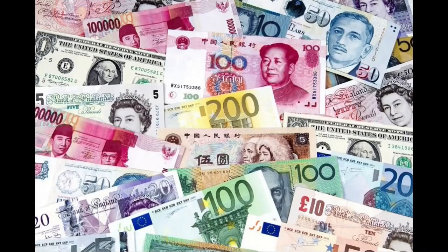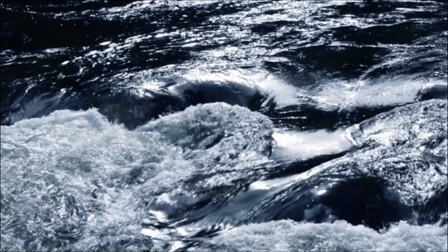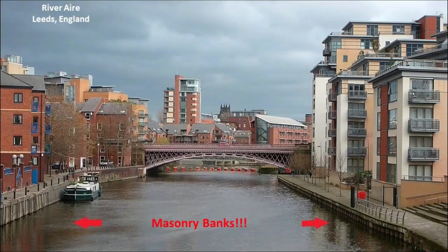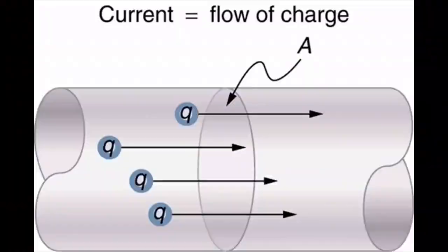What do banks deal in? Currency. Currency is defined as a system of money in general use in a particular country. A river current is defined as the water moving in a river. A river bank is the land at either edge of a river. A river is defined as a large natural stream of water flowing in a channel to the sea, a lake, or another such stream. An electric current is a stream of charged particles, such as electrons or ions, moving through an electrical conductor or space.